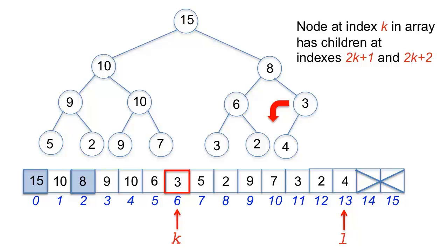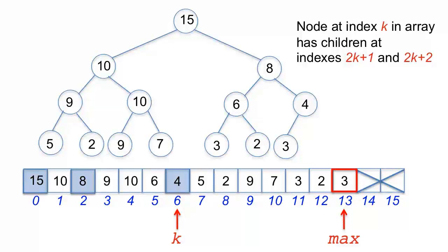Since there isn't a right child, there is no comparison between children, and max is set directly to l. Then the k item 3 is compared with the max item 4, which leads to a swap. Following this, k is set to max.